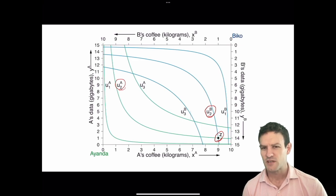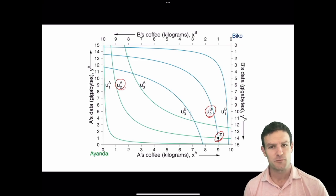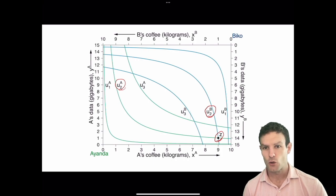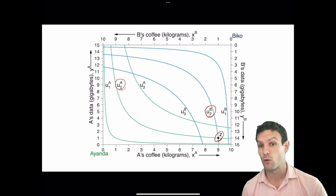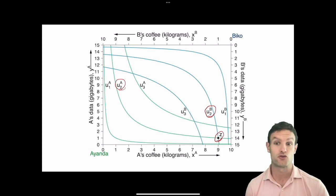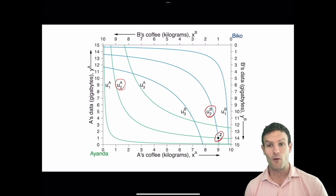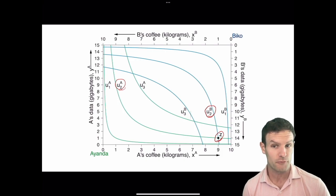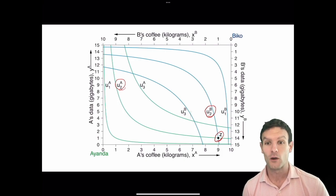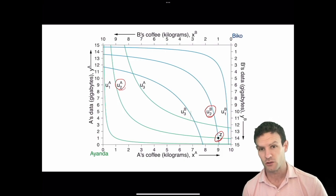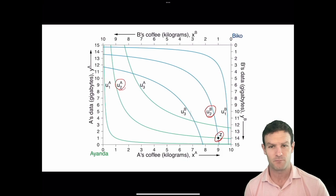An allocation is Pareto efficient when there exists no alternative allocation that is Pareto superior to it. So we want to think about alternative allocations in the Edgeworth box where at least one person could be better off and no one would be made worse off relative to point Z.